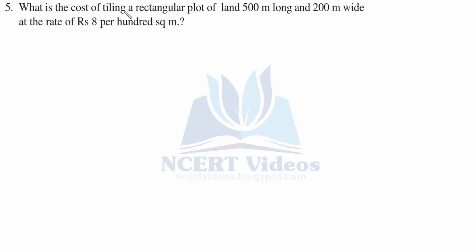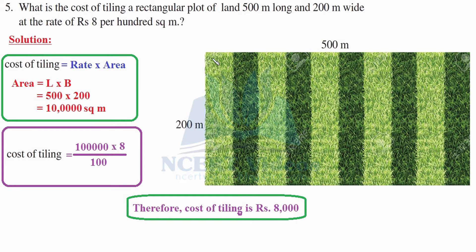Fifth question: what is the cost of tiling a rectangular plot of land 500 meter long and 200 meter wide at the rate of rupees 8 per 100 square meter? We have to find the area first. Area equals length into breadth. Substituting the values: 500 into 200. Multiply 5 by 2 and attach four zeros, giving 100,000 square meter.